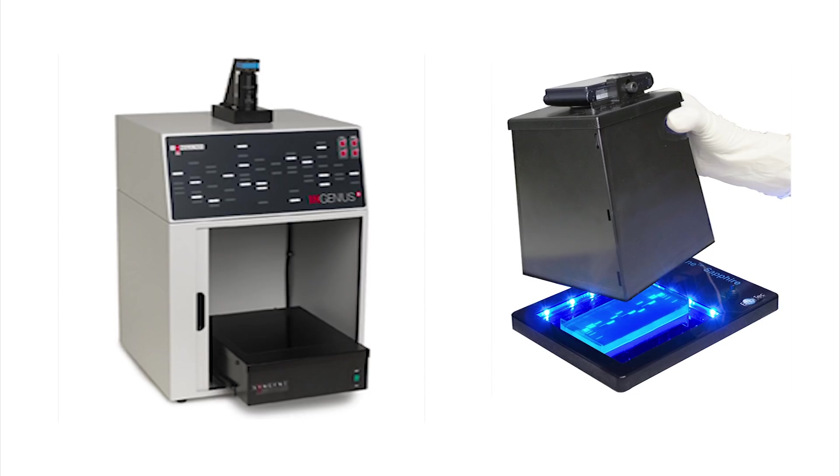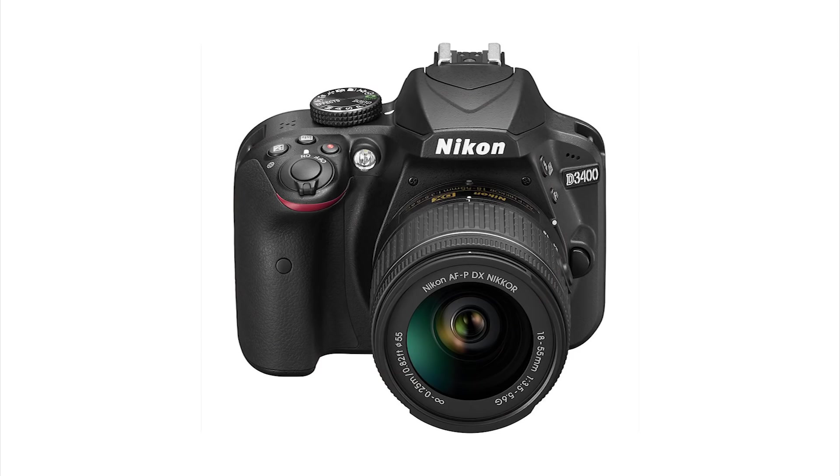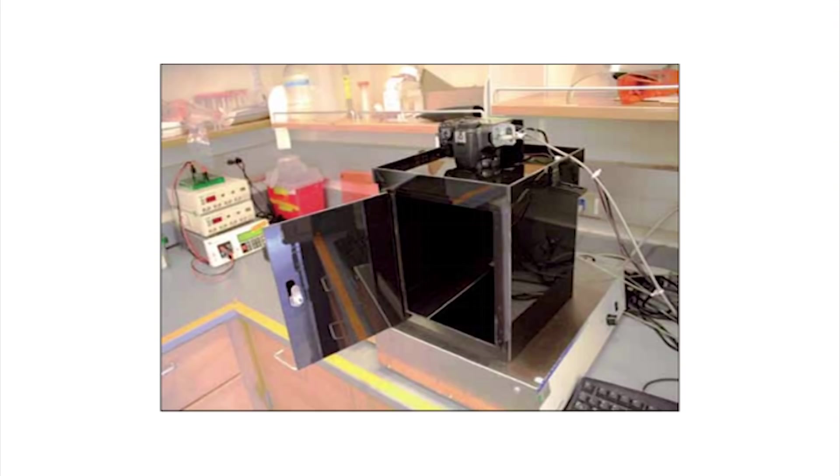However, the proper way to do this is with a device called a gel dock. Basically it's just a transilluminator but inside a light proof box and with a far better camera mounted at the top. There's a nice filter on the camera that blocks the UV better than the cheap plastic does, and since the camera can take long exposures and adjust contrast and lots of other little tweaks, even the faintest bands can be seen. Since we desperately need a gel dock for the lab, I'll be building one in the next week or so and we'll go through that build as soon as I do.